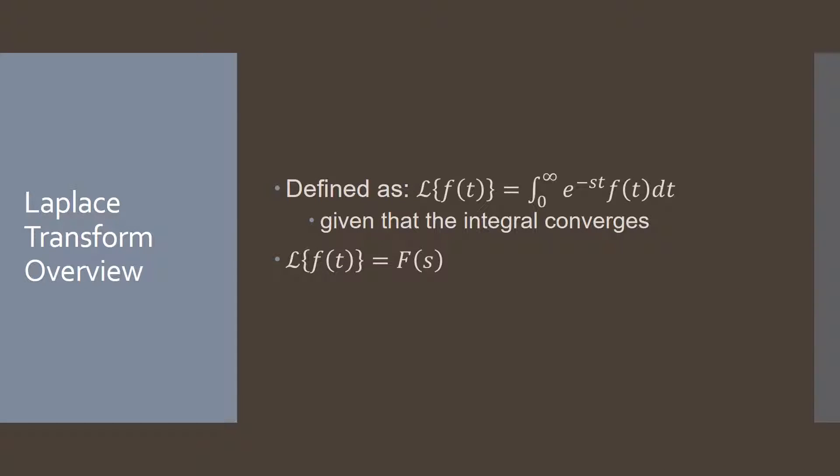Before getting into how to solve, I'll go over a few tools we'll be using. The Laplace transform is defined as the integral from zero to infinity of e^(-st) times f(t) dt, given that the integral converges — meaning f(t) can't grow larger than e^(-st); f(t) needs to grow slower or at the same rate. Another way to think of this is that the Laplace transform of little f(t) equals big F in terms of S, where S is our frequency space — we're going from f(t) in time to F(S) in frequency space.